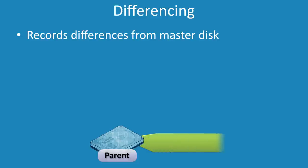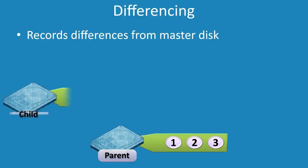Once you have the virtual hard disk configured the way you want it, the next step is to create a second virtual hard disk known as a child. The second virtual hard disk will use the parent drive for its data.